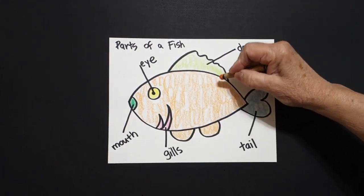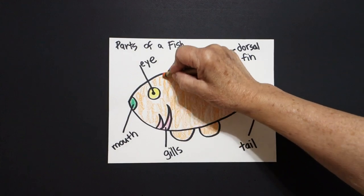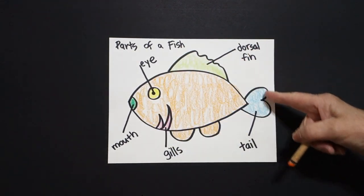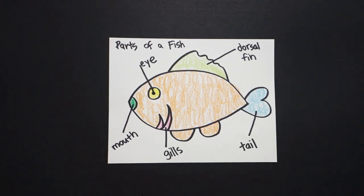So, not only have we learned the parts of a fish, but now we know how to label the parts of a fish. Okay, let's see what this looks like all colored in.